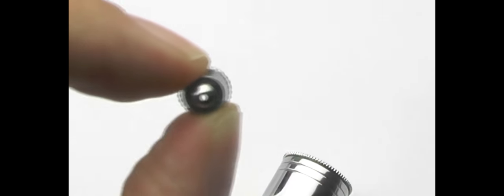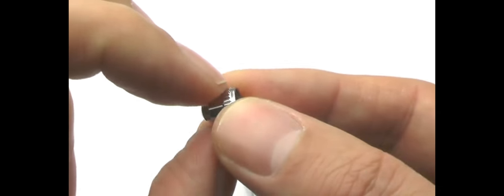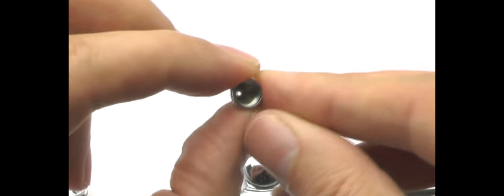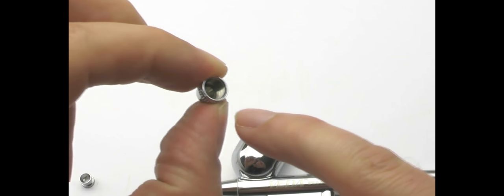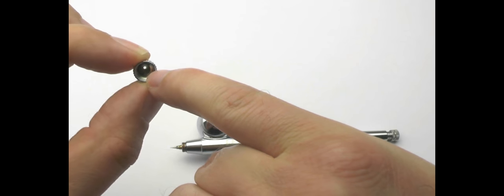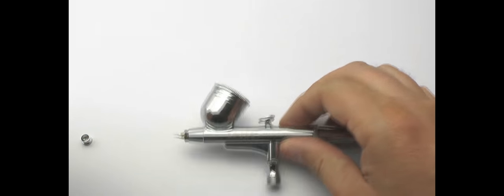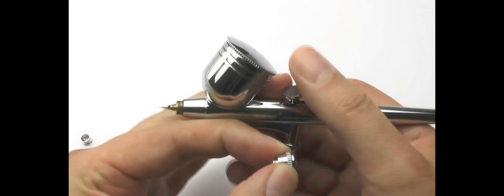The nozzle cap, you see it's just got a hole through the center there, and the paint gets atomized within this section and sent out through that aperture there. Just pull that needle back and out of the way.